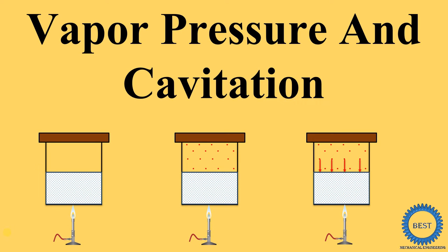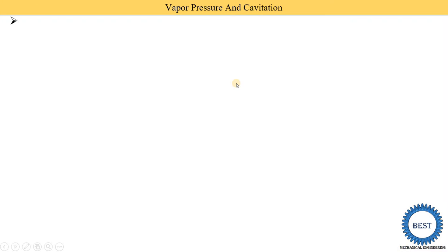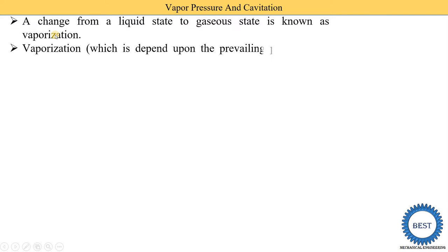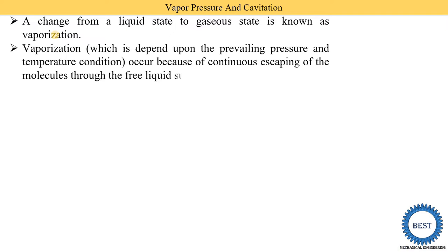In this video I explain about vapor pressure and cavitation. First we understand about vapor pressure. A change from liquid state to gaseous state is known as vaporization — the substance is converted from liquid state to gaseous state. Vaporization occurs because of the continuous escaping of molecules through the free liquid surface.